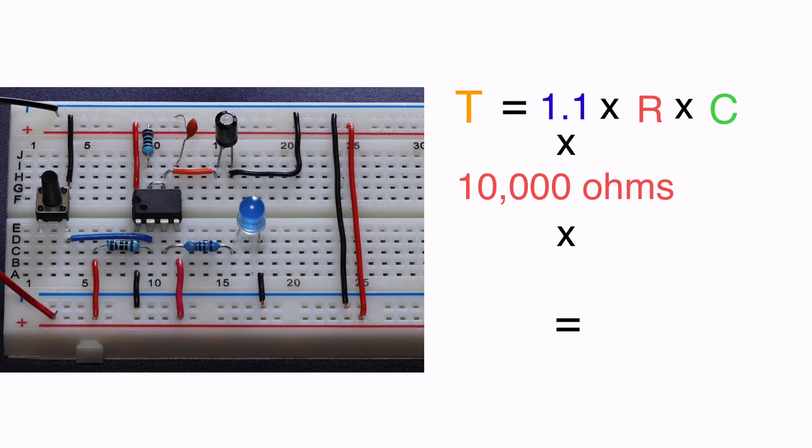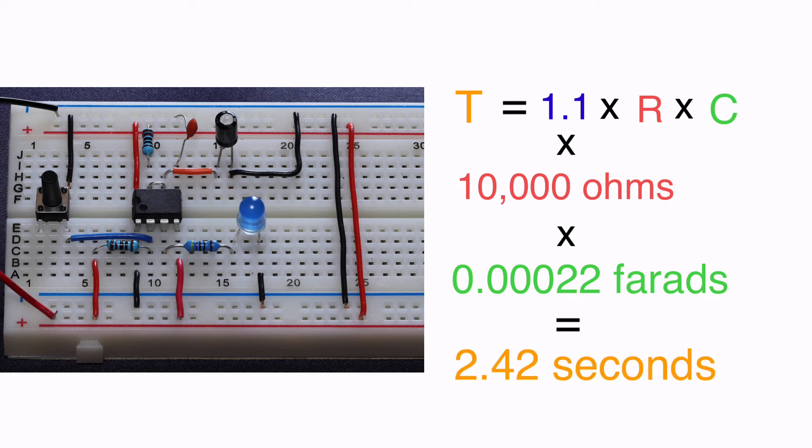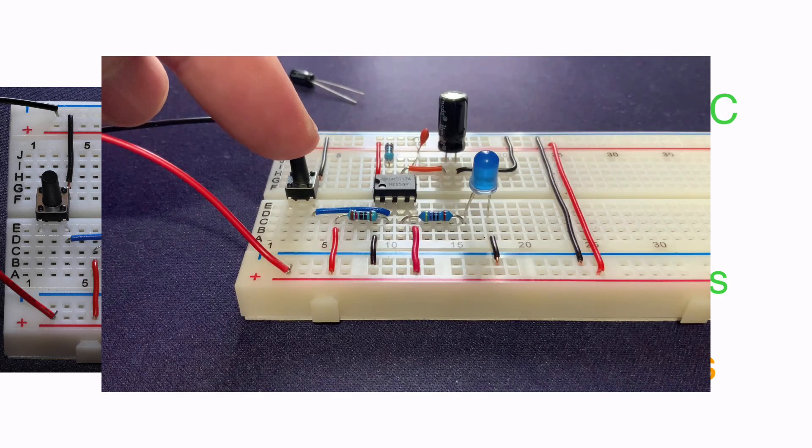220 microfarads is 0.00022 farads. And so if we change that value in our formula, we get a projected time interval for our output of 2.42 seconds. And if I press the switch, that's what we'll get.